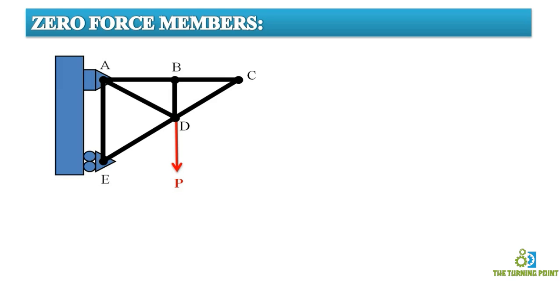So here when I consider equilibrium of point B, first I have represented that point B. So here point B is having connection with the three members: AB, BC and BD.